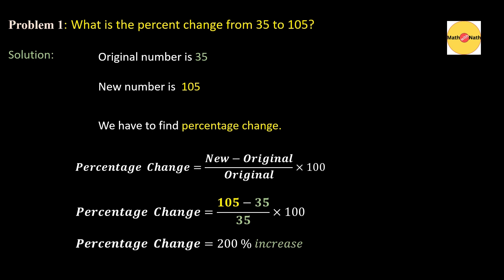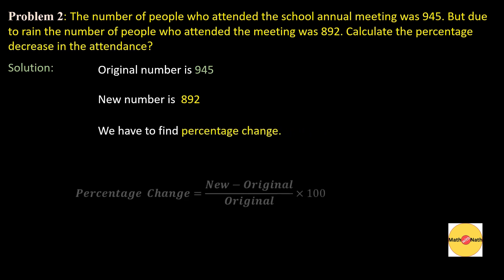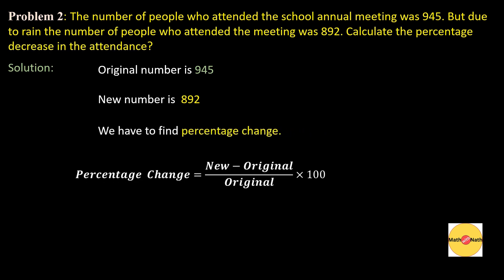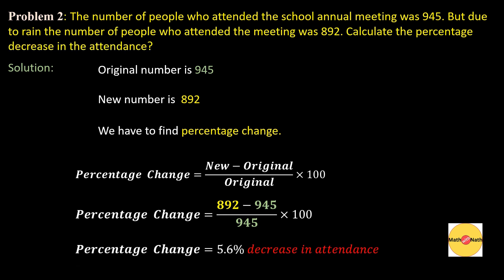Let us do one more problem: The number of people who attended the school annual meeting was 945, but due to rain, the number of people who attended was 892. Calculate the percentage decrease in attendance. In this problem, the original number is 945 and the new number is 892. Using the percentage change formula and substituting the above values, on simplification we get minus 5.6. This means the percentage change is a 5.6% decrease in attendance.